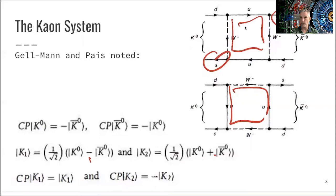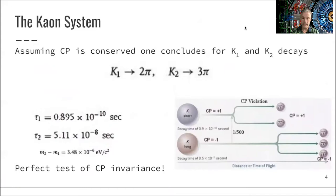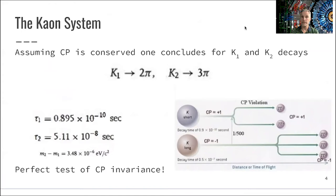It turns out that the lifetime of the K1 and the K2, those eigenstates, is very different. One is 10 to the minus 10, and one is 5 times 10 to the minus 8. The K1 decays much, much quicker than the K2. So this then sets the stage to a test of CP violation.